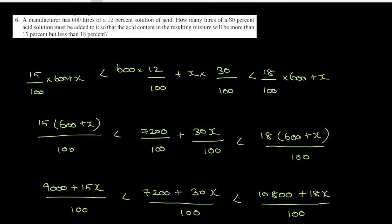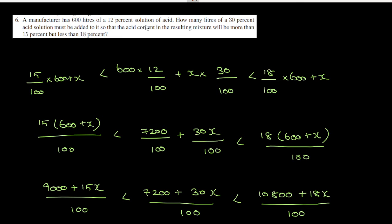Hello students, welcome back to Smartlawn. So this is question number 6 in exercise 2.3. Interesting sum — a manufacturer has 600 litres of 12% solution of acid.